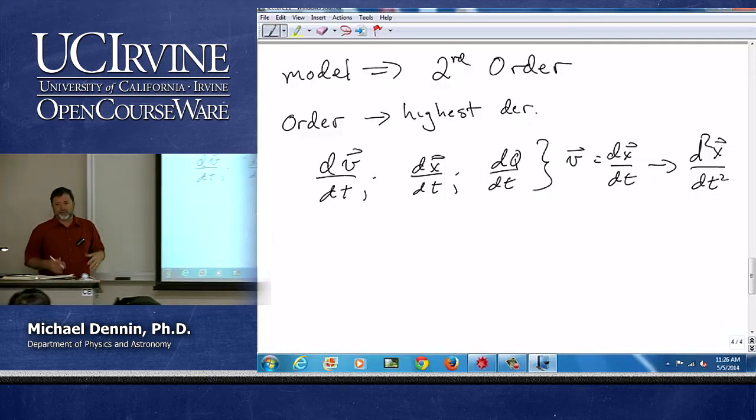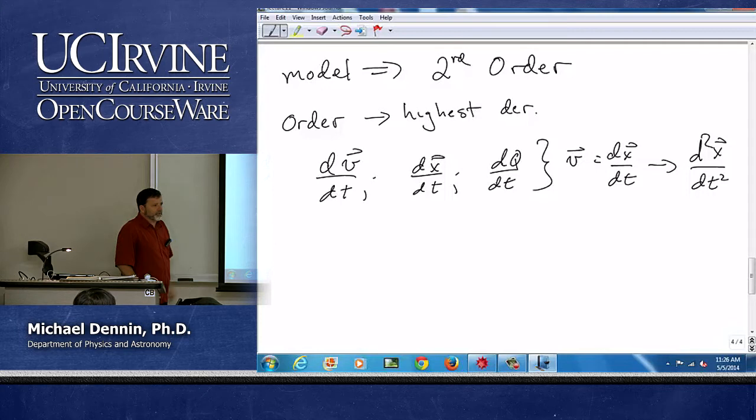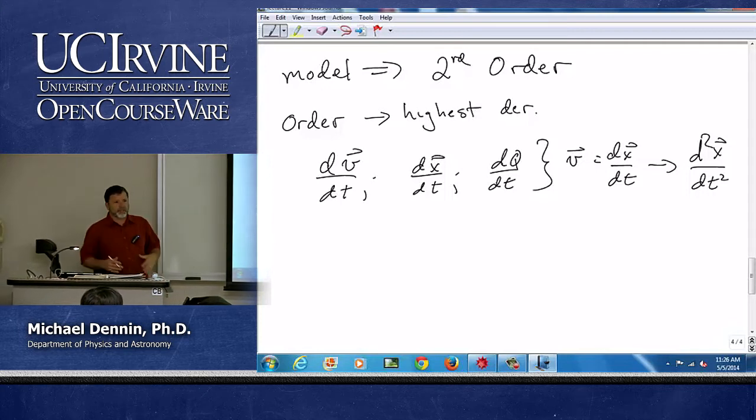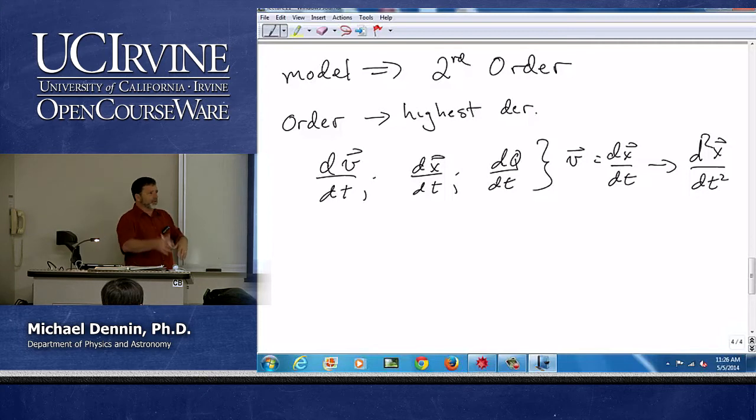Occasionally, like there's weird places like in elasticity, if you think about the bending of a thin beam, it turns out to be a fourth order differential equation. But that's because you're building up from forces, from displacements to forces, to torques, to something else, and so you get multiple derivatives.